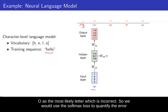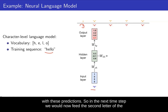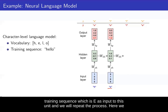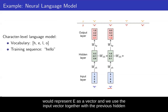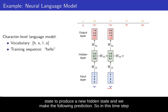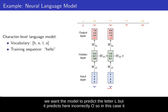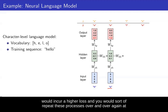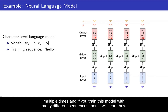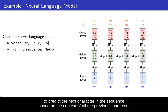In the next time step, we feed the second letter of the training sequence, which is E, as input to the unit and repeat the process. E is represented as a vector, and we use the input vector together with the previous hidden state to produce a new hidden state and make the following prediction. In this time step we want the model to predict the letter L, but it incorrectly predicts O, so it incurs a higher loss. We repeat this process over and over again, and if we train this model with many different sequences, it will learn to predict the next character based on the context of all previous characters.